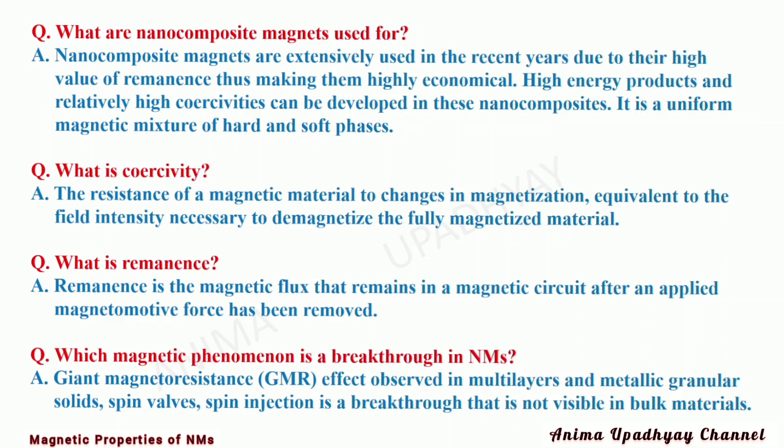What is coercivity? The resistance of a magnetic material to changes in magnetization, equivalent to the field intensity necessary to demagnetize the fully magnetized material, is called coercivity. What is remanence? Remanence is the magnetic flux that remains in a magnetic circuit after an applied magnetomotive force has been removed.